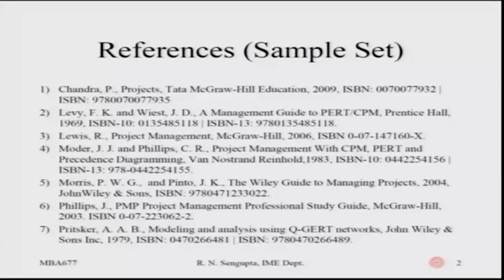The third, fifth and sixth books are general in nature — the third is Lewis, the fifth is Morris, and the sixth is Philip. The Philip book, though old and in line with Levy and Weist, has a very in-depth mathematical analysis of project management. It covers precedence diagrams, operations research optimization frameworks, and goes deeper than Levy and Weist. It also has solved problems and some coding in SLAM, which is a simulation package — we won't use it here but I wanted to mention it.